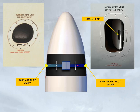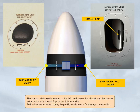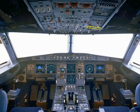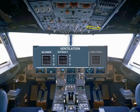Both valves are inspected during the pre-flight walk-around for damage or obstruction. On the overhead panel, there is a ventilation panel that contains three push-button switches associated with the ventilation system. During the pre-flight cockpit scan, you should confirm that these switches are in their lights-out position. The avionics ventilation system will then operate automatically and requires no further pilot input.